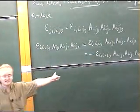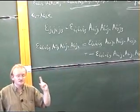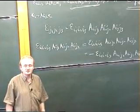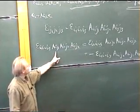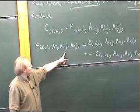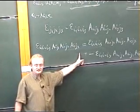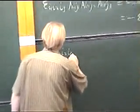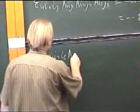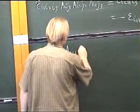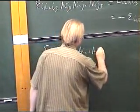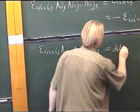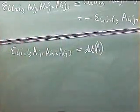So now all I have to do is, if this is totally antisymmetric, it's only going to be non-zero when j1, j2, and j3 each take different values. So I'll give you the value when j1 equals 1, j2 equals 2, and j3 equals 3. In that case, we have epsilon i1, i2, i3, ai1 1, ai2 2, ai3 3.